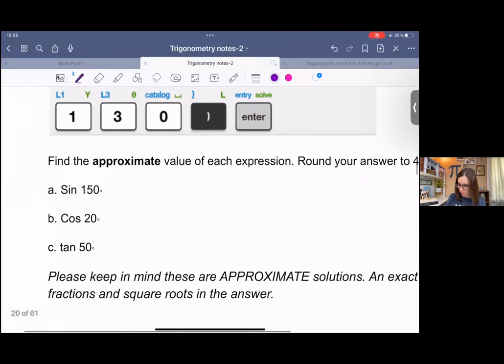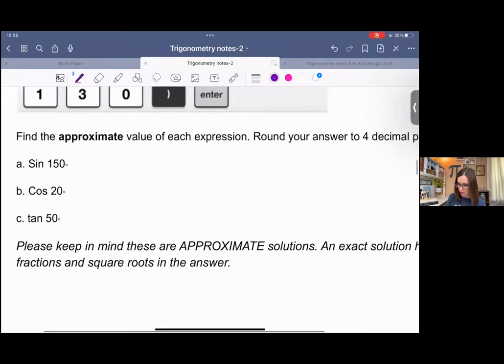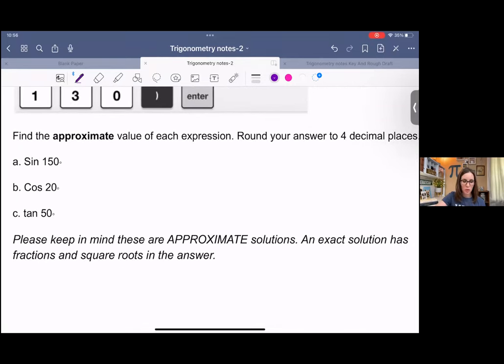And I have the keys there down at the bottom. So, I already spoiled the first one for you. But go ahead and try these in your calculator. Round to four decimal places and come back and check your work.